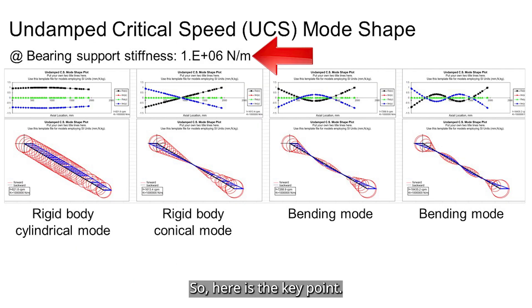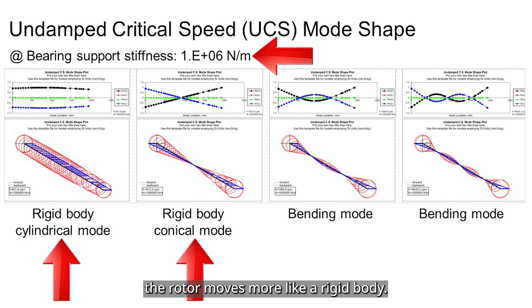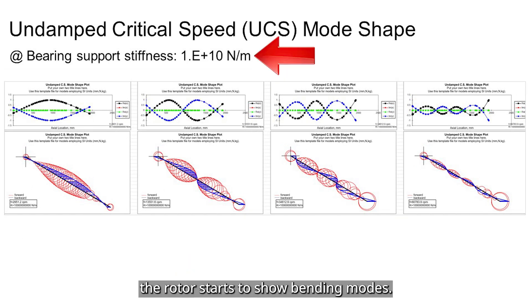So here's the key point. When the bearing stiffness is low, the rotor moves more like a rigid body. As the stiffness increases, the rotor starts to show bending modes. Let's break that down with mode shapes.